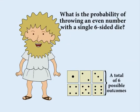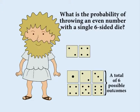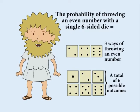What is the probability of throwing an even number? There are three ways this can happen: if you throw two, four, or six. So the probability is three divided by six, or one-half.